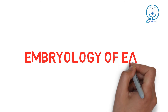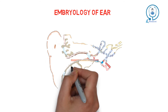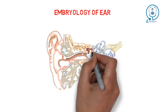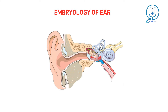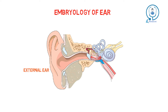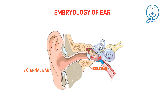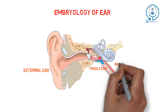Before starting with embryology of the ear, we must know about the parts of the ear. The ear is divided into three parts: external ear, middle ear, and inner ear.